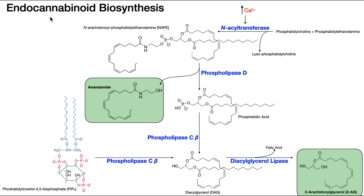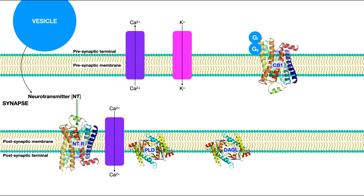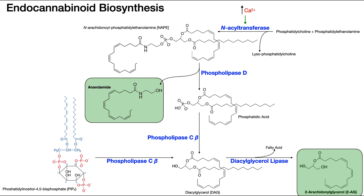An endocannabinoid is a cannabinoid compound that is made endogenously, meaning within your own body. So you have your own cells, in particular neurons, that make and release these endocannabinoids. In this video we're going to talk about their biosynthesis — there are two major ones, although there are others. And then in the next video, we're going to go into their basic mechanism of action, and then we'll go from there. So let's talk about their biosynthesis.